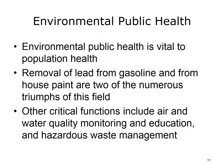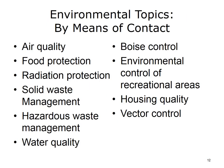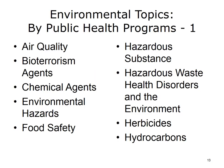Environmental public health is a critical component of public health and has made many notable achievements. One of the best known was the removal of lead from gasoline and house paint. Some critical functions of this branch of public health include air and water quality monitoring and education and hazardous waste management. Public health environmental topics can be categorized by their means of contact with the population, such as air, food, water, etc. Another categorization method is to organize topics by public health program.